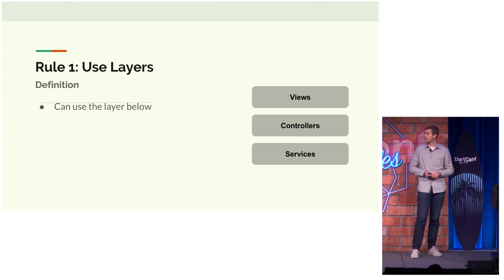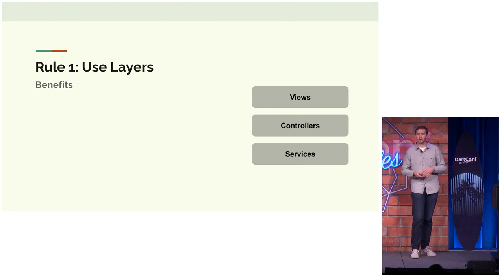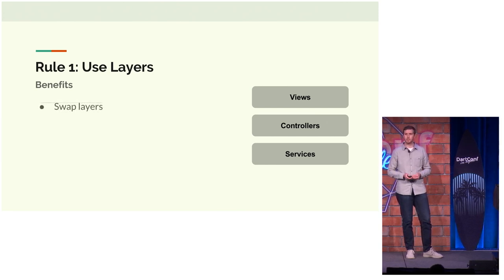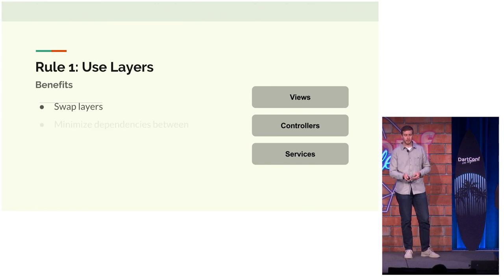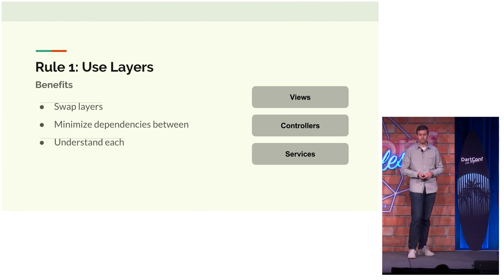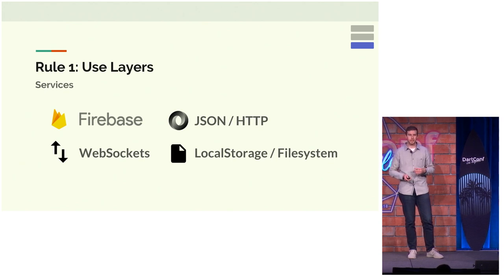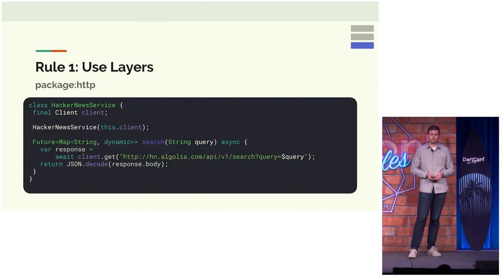Each layer in our mind can use the layer below it, and in general it tries to interact with the other layers in an abstract way — they don't concern themselves with the implementation. The primary reason you may want to do this is to target web and Flutter: you can swap the layers out, use a different view for Flutter and a different view for web. You may also want to minimize dependencies between layers and understand each layer separately. The lower layer includes things like Firebase, JSON over HTTP, WebSockets, and caching on local storage or the file system on Flutter.